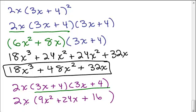Now, what if you distribute your 2x? Well, 2x times 9x squared is 18x cubed up here. 2x times 24x is going to give you plus 48x squared and 2x times 16 is 32x. So, got the same answer either way. So, there's a multi-step problem when you have more than just two things to multiply together.